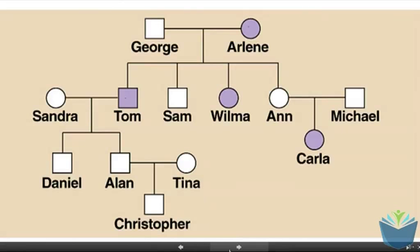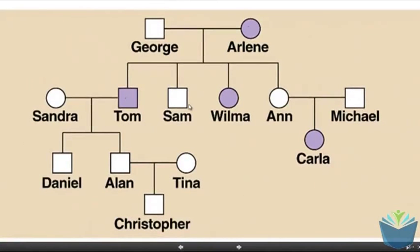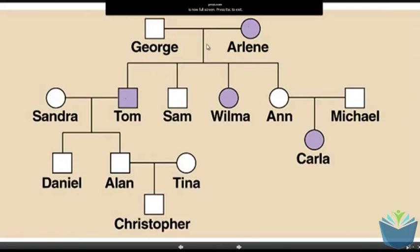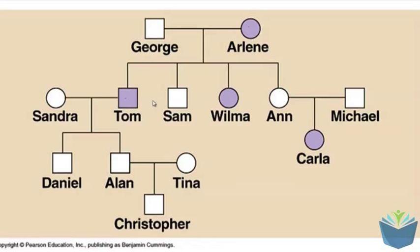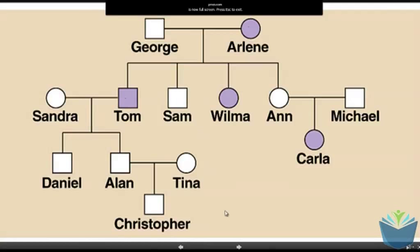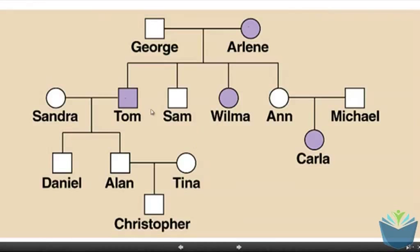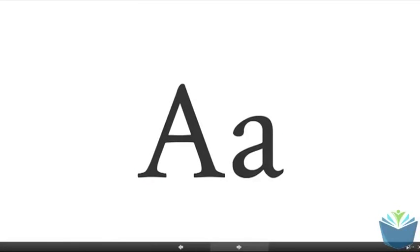On the genetic pedigree diagrams, you can look at people's offspring and figure out their specific genotype. An interesting one to find out might be George. George married Arlene and has Tom, Sam, Wilma and Ann as kids. To figure out what George's genotype is, you have to look at his offspring. If Arlene has small a, small a, George must pass one of his alleles to his offspring. Because he's produced kids that have got the condition, he must be a carrier. Therefore, George's genotype must be heterozygous big A, small a.